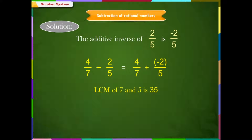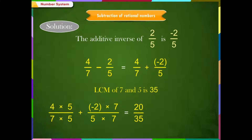4/7 minus 2/5 equals (4×5)/(7×5) plus (minus 2×7)/(5×7), which equals 20/35 plus (minus 14/35), which equals (20 + (minus 14))/35, which equals 6/35. Therefore, 4/7 minus 2/5 is equal to 6/35.